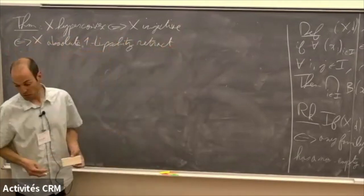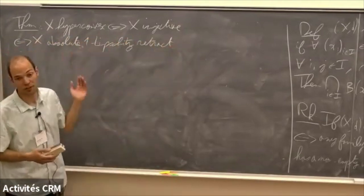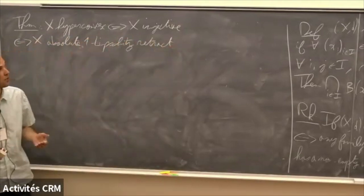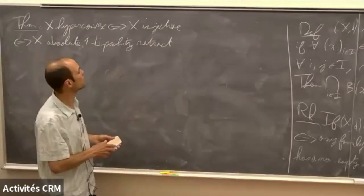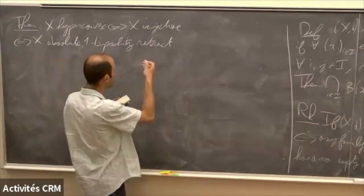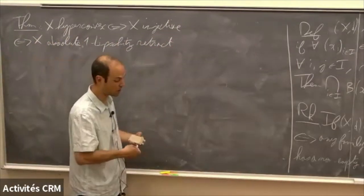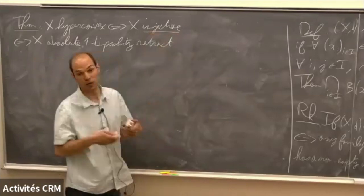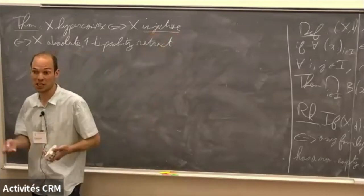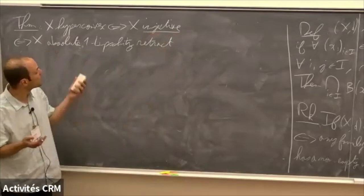One may choose a name among those, and since Oslong is one of the first to have used injective metric spaces in the setting of geometric group theory, I will rather use injective metric spaces.